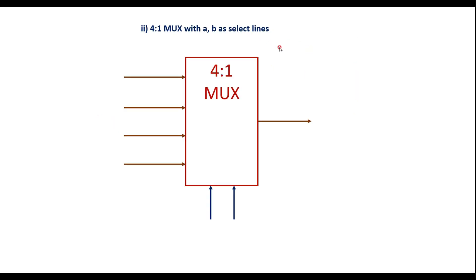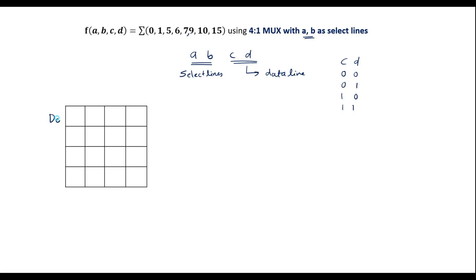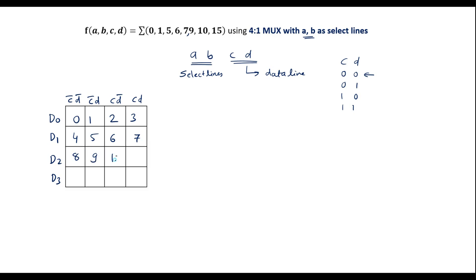For a 4-to-1 MUX, there are four data lines: D0, D1, D2, D3, and the select lines are A and B. In the implementation table, write D0 through D3 with their corresponding data values: 00 is C̄D̄, 01 is C̄D, 10 is CD̄, and 11 is CD. Then list all possible minterms 0 through 15.